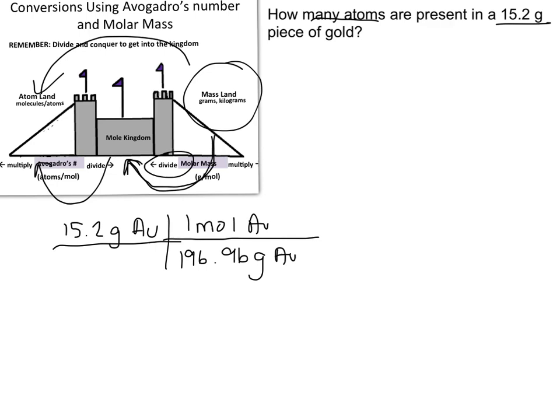And this conversion alone, if I were to just do this calculation out, I would end up with just moles. So in order to go from moles to atoms, I must utilize Avogadro's number. Now, in order to get out of the kingdom, I need to multiply. So what I'm going to do is I'm going to put 6.022 times 10 to the 23rd atoms of AU here, and that's per one mole of AU.